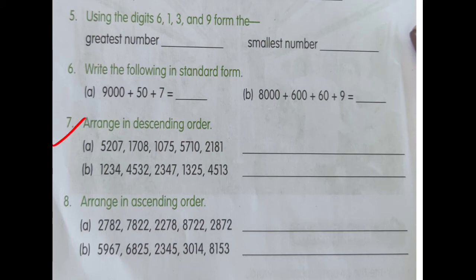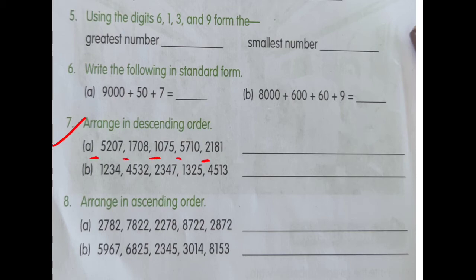Question 7: arrange in descending order. In descending order, the greatest number comes first and the smallest number comes last. Here the leftmost digits are 5, 1, 1, 5, 2. We always do the comparison with the leftmost digits of each number. First, note down all the numbers in your notebook as they are.